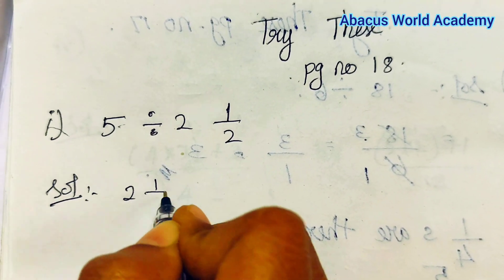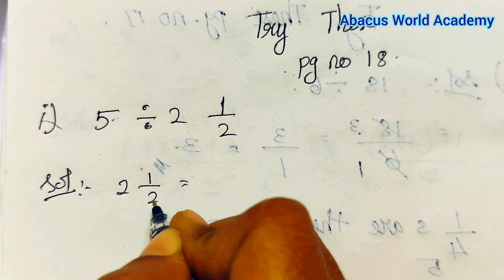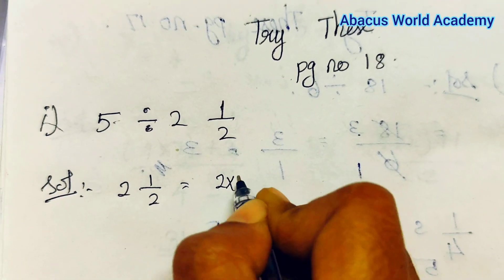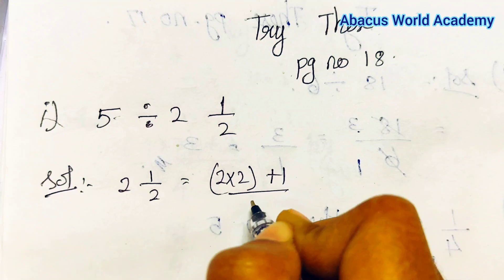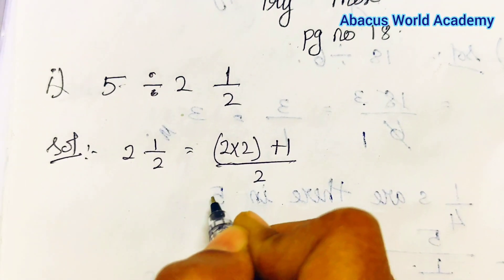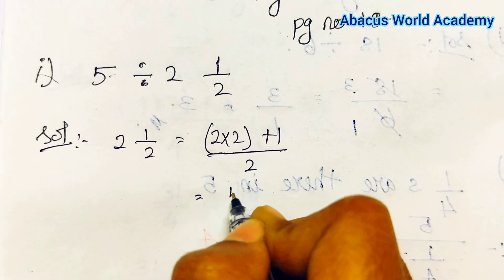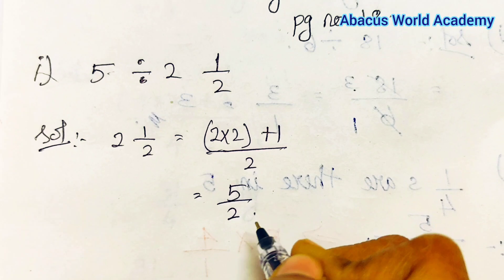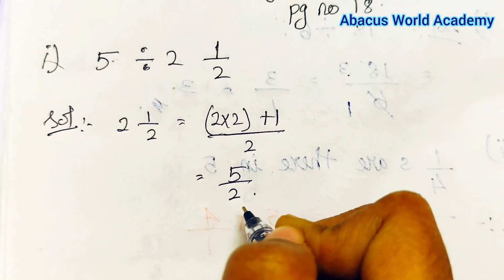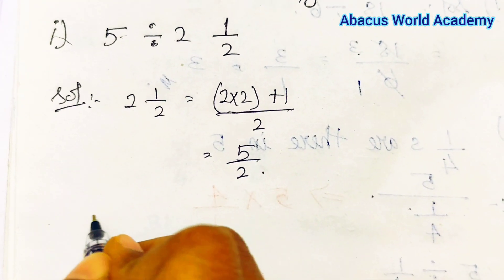2 and 1/2 is equal to 2 into 2 plus 1 by 2, is equal to 4 plus 1, 5 by 2. So mixed fraction we have, fraction convert. So now question we have 5 divided by 5 by 2, okay.